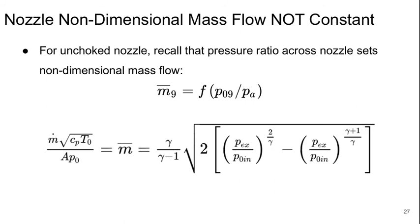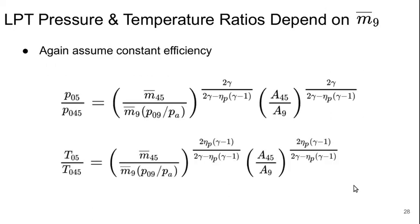So, now, unfortunately, because it's unchoked, our nozzle non-dimensional mass flow is not a constant anymore. Instead, the non-dimensional mass flow at the core nozzle at station 9 is a function of the pressure ratio there. And this is the way in which it is a function of the pressure ratio. So, this means that we're going to have to really do some kind of iterative solution.